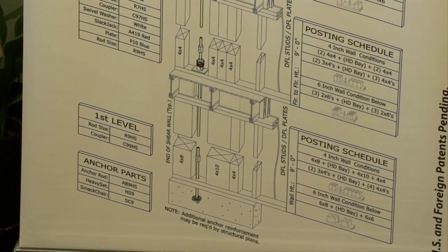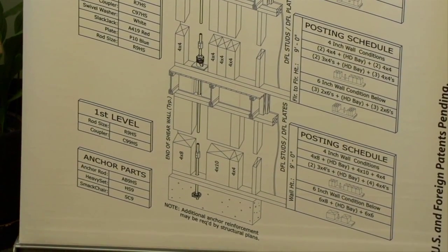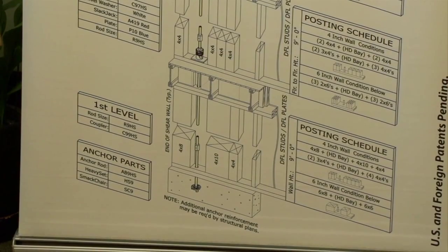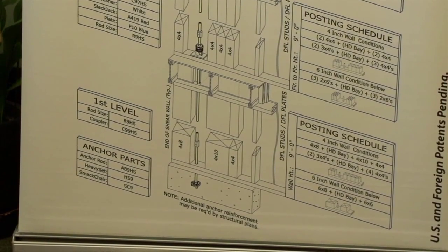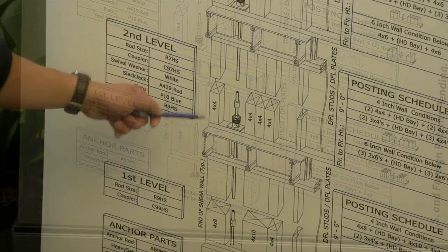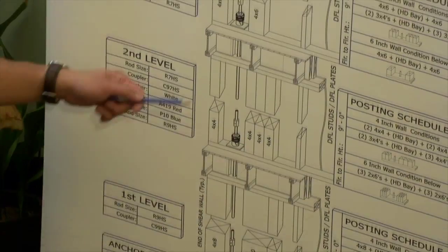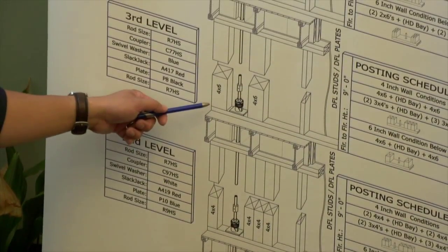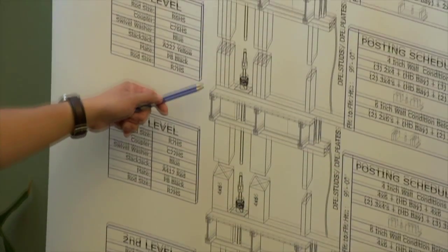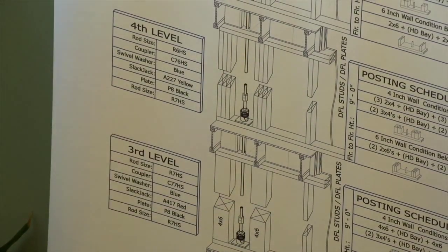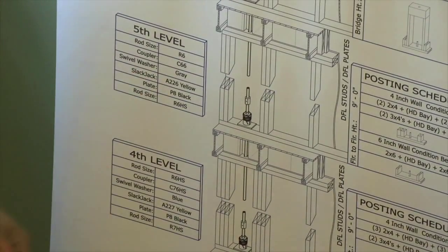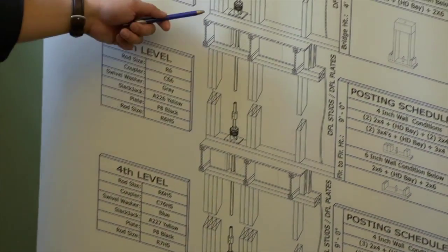The tension loads are cumulative as we work our way down the structure. The bottom stories have much heavier thread rods, and they get lighter as we work our way up. The compression members required to counteract the overturning moment also decrease as we work our way up the structure.